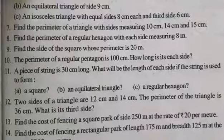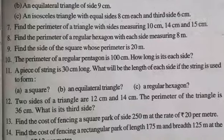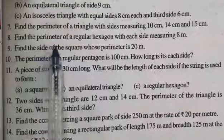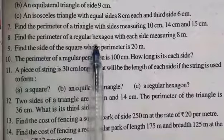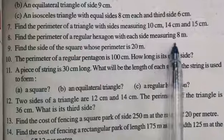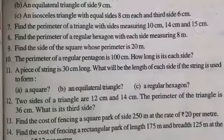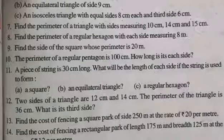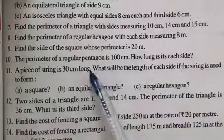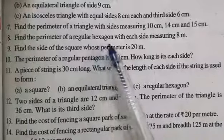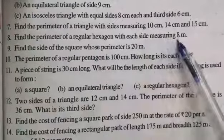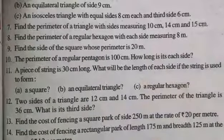Question number 8 of exercise 10.1: Find the perimeter of a regular hexagon with each side measuring 8 meters. We have to find the perimeter of a regular hexagon, and the measure of each side of the hexagon is 8 meters.